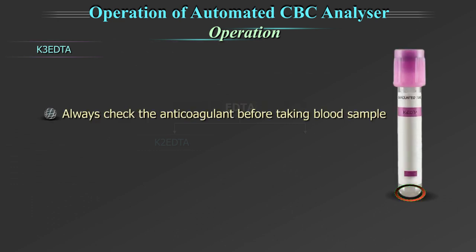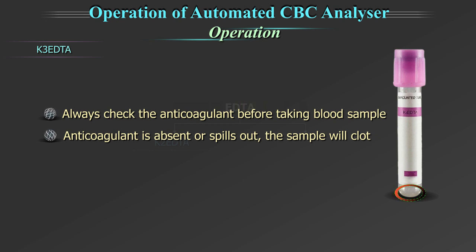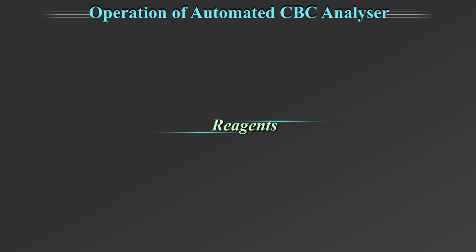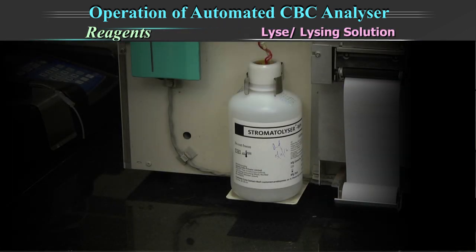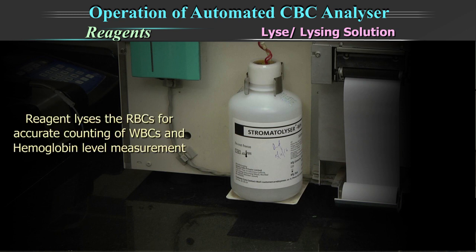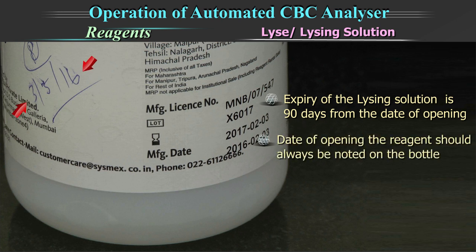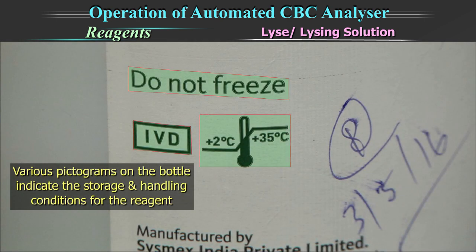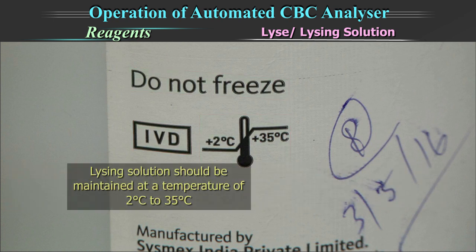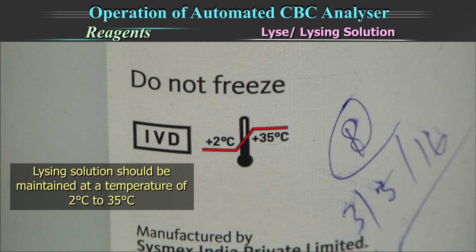Always check the anticoagulant in the K3 tubes before taking a blood sample. If the anticoagulant is absent or spills out, the sample will clot. The lysing solution — for example, stromatalyzer — lyses the RBCs for accurate counting of white blood cells and hemoglobin level measurements. The expiry of the lysing solution is 90 days from the day of opening. Please check the expiry of the reagent on the label or from your manufacturer. The date of opening should always be noted on the bottle. The lysing solution should be maintained at 2 to 35 degrees centigrade.